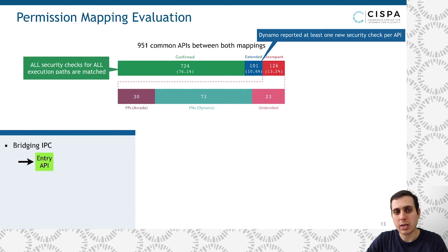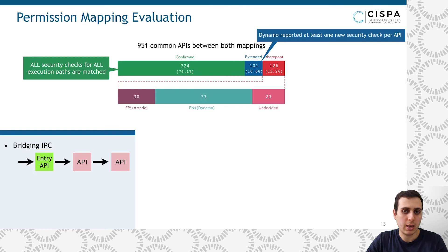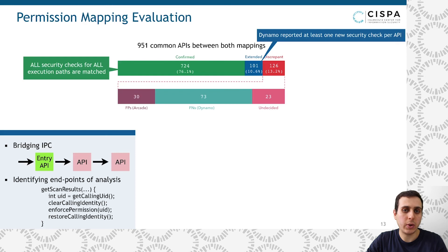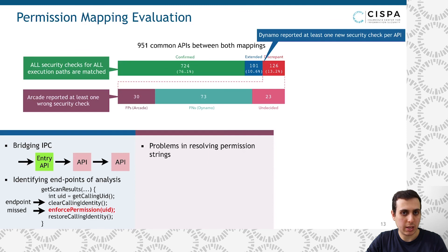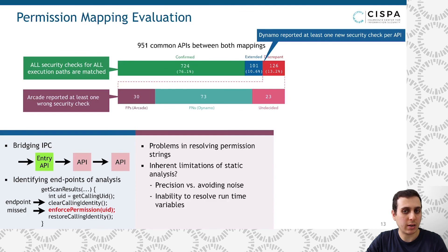First, we found that Arcade focused on analyzing the security policy of the entry point API and overlooks other APIs that can be further called from within that entry point, leading to reporting only a subset of the actual security checks. Another reason is that Arcade relies on heuristics for ending the analysis — for instance, they end the analysis when the caller's identity is cleared. However, we found cases where the security checks are enforced against the caller's identity even after the identity is cleared, and therefore such security checks will be missed from Arcade's mapping. The manual analysis found 30 APIs in Arcade that report wrong permission mappings. The Arcade authors attributed this to issues in string resolutions, but we also see other possible causes like the inability to resolve runtime variables, which causes confusion in which path to follow during the analysis and results in imprecision.